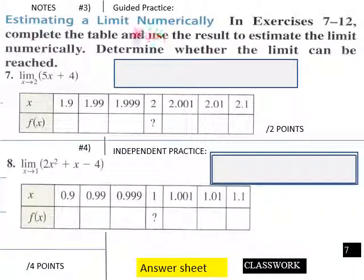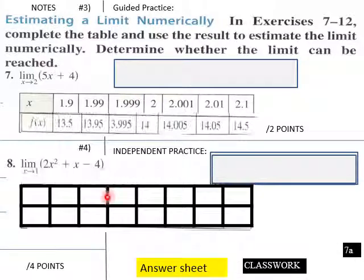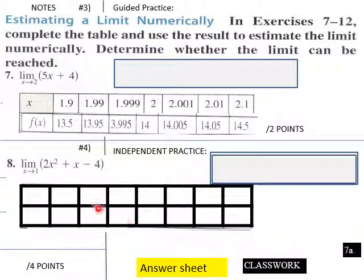Try one: complete the table, use the result to estimate the limit numerically, and determine whether the limit can be reached. We have the limit of 5x plus 4 as x approaches 2. The table values are in increments of thousandths. At x equals 1.9 you get 13.5, at x equals 2 you get 14, at x equals 2.1 you get 14.5. The limit is 14 and it can be reached.